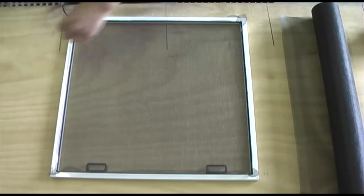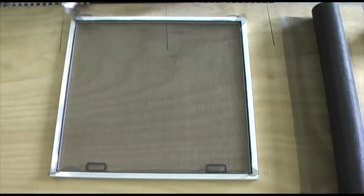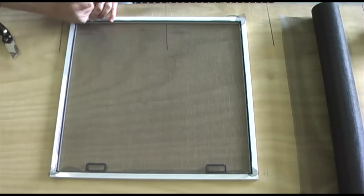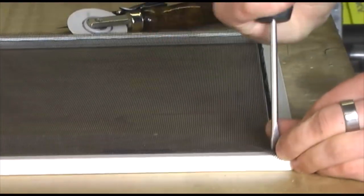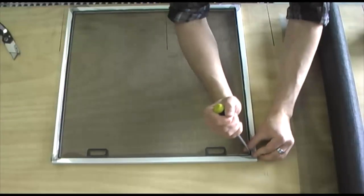After your screen is splined in, trim off the excess spline. Now, take a screwdriver and press in the corners of your spline if necessary.